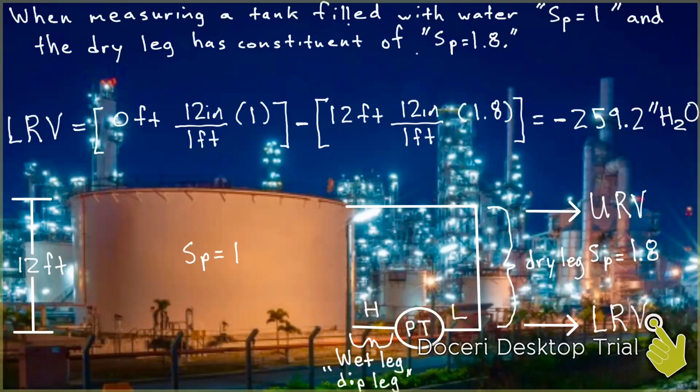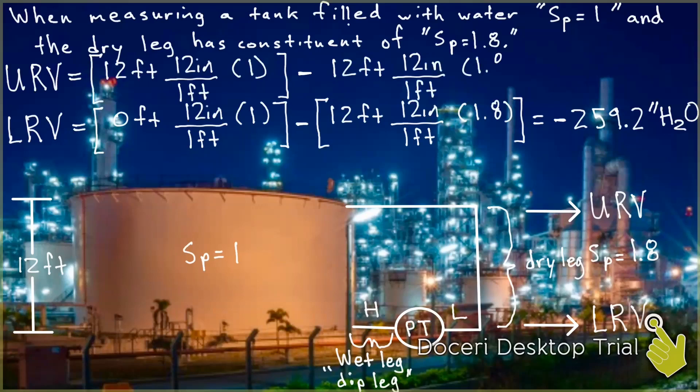Now we're going to go ahead and calculate the upper range value. Now we have the upper range value, and how I like to always say it, it's the top minus the top. It's not just the top, it's the top of the tank minus the top of the constituent.